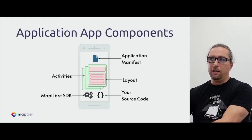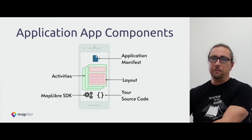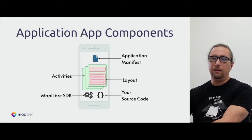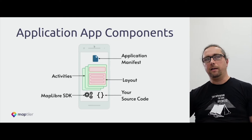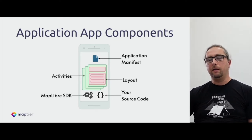There is also the MapLibre SDK itself, and the application view which we will write. There is also something called the application manifest — a list of metadata for your application, containing the marketing name, version, and so on.